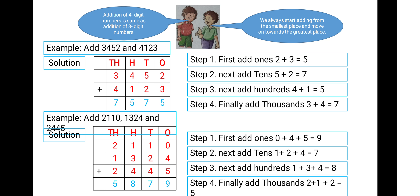Step 4, finally add the 1000's: 3 plus 4 is equal to 7. In the figure, we can see how to add numbers in four-digit addition sums. In four-digit number addition, there is division by 1000, 100, 10's, and 1's. The steps are: first add 1's, then add 10's, then add 100's, and finally add 1000's.